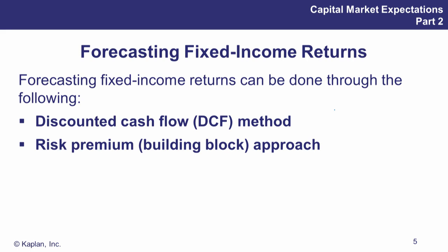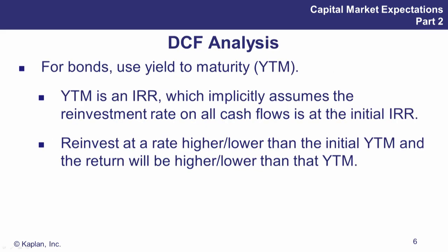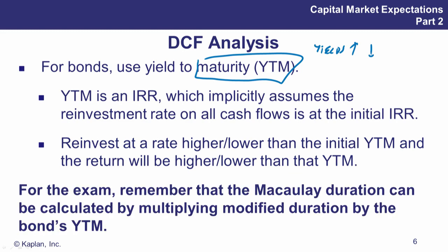With the discounted cash flow approach: when you look at the yield to maturity of a bond, we know there are impacts that can change this. Changes in yield change the interest rates up or down. One link here is to fixed income and the idea of Macaulay duration. We have two risks: number one, price risk; and number two, reinvestment risk.